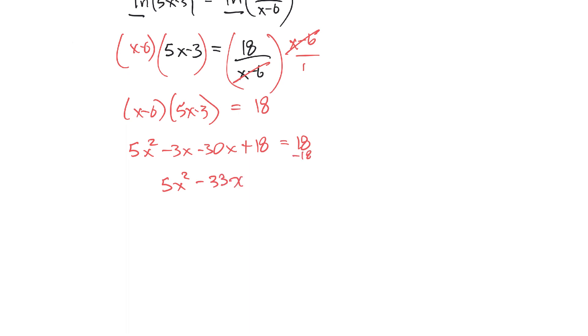So I'll have 5x squared minus 33x. If I subtract 18 on both sides, those will cancel. So that equals 0.